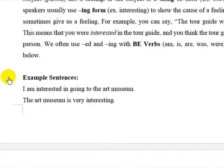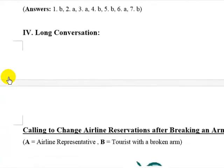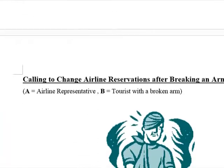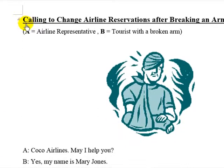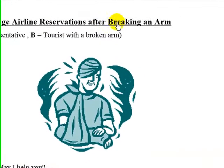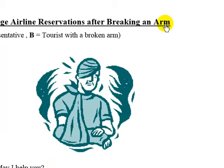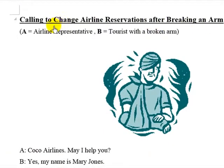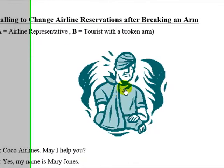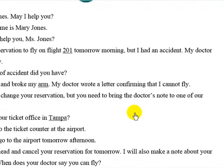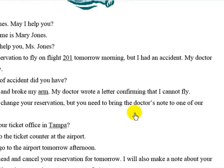Okay, and let's go on to the long conversation — calling to change airline reservations after breaking an arm. This time, I am A, an airline representative — a person who works for an airline. And you are B. As you see in this picture, a tourist with a broken arm. I hope this doesn't happen to you. Okay, let's try.